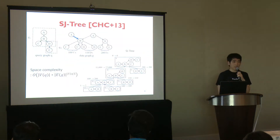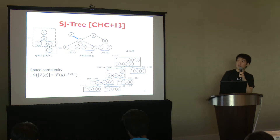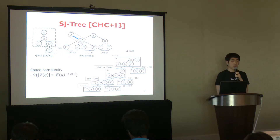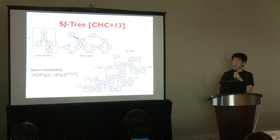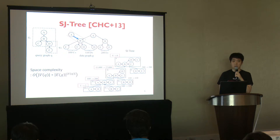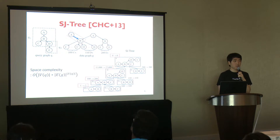In SJ3, it decomposes a query graph Q into a set of smaller subqueries and materializes all partial solutions matching those subqueries. When an update occurs, it recursively performs join operations to update those partial solutions and find positive matches if they exist. However, SJ3 also has a serious performance problem with maintaining the enormous size of partial solutions. In this example, the size of partial solutions increases twice by a single edge insertion even though there are no positive matches to report. Moreover, the space complexity of SJ3 increases exponentially in the worst case.